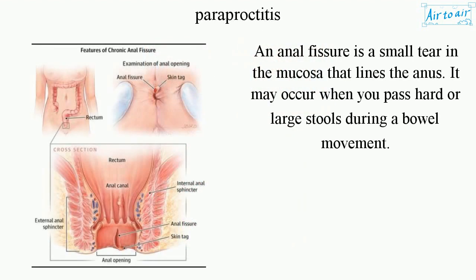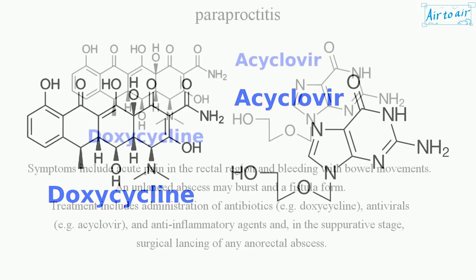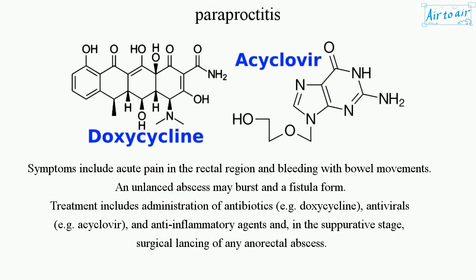An anal fissure is a small tear in the mucosa that lines the anus. It may occur when you pass hard or large stools during a bowel movement. Symptoms include acute pain in the rectal region and bleeding with bowel movements.